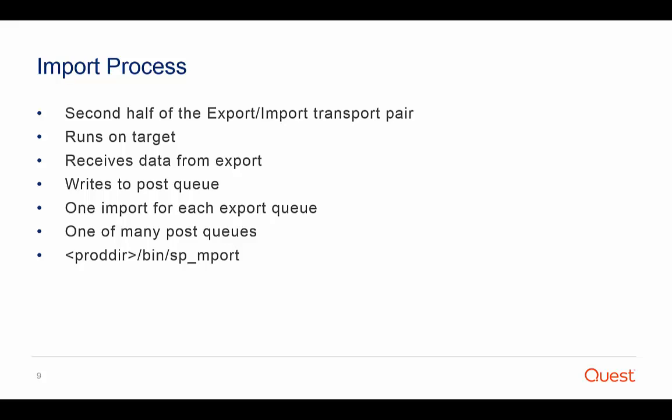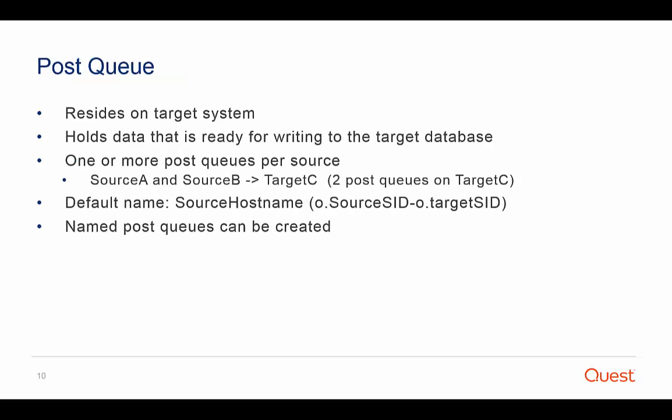The import process is the second half of the export-import transport pair, operating on a target system to receive data and build a post queue. If there are two source systems replicating to a target system, there will be two import processes, and so forth. By default, import builds one post queue on a target system for each data source being replicated from the source system. The import process is named SPMPORT and resides in the bin sub-directory of the SharePlex product directory. Please note that for replication between Oracle instances on the same server, export and import processes are not created. Instead, the read process places data directly into a post queue on that system.